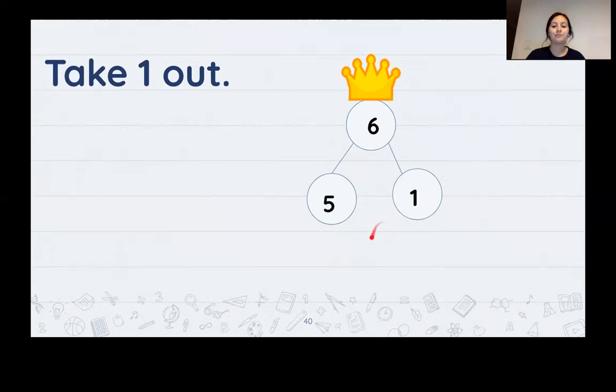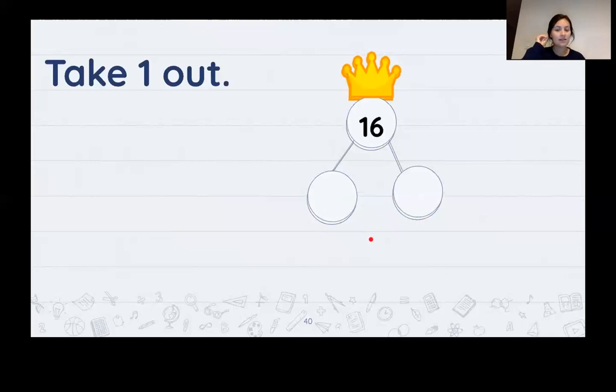Let's try another one. Sixteen. Wait until I snap my fingers, take one out. If you said 16, when you take one out, it's 15 and one, you are correct. Because if you take one away from 16, you have 15. Just like when we took one away from six, we have five and one.